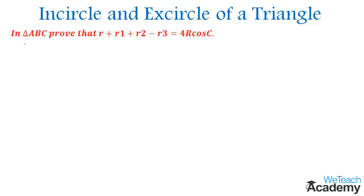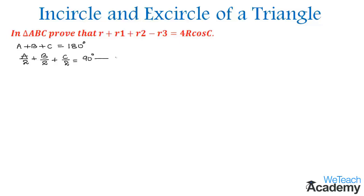Let us revise that the sum of angles in triangle ABC: A + B + C = 180 degrees. Dividing both sides by 2, we get A/2 + B/2 + C/2 = 90 degrees. Let us name this as equation 1.